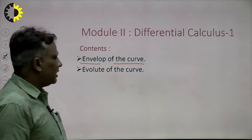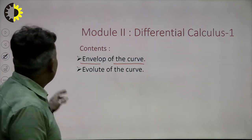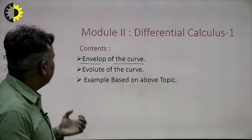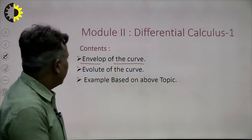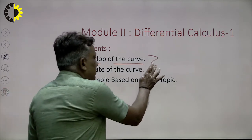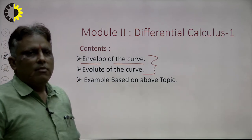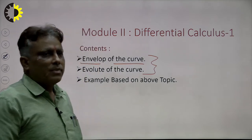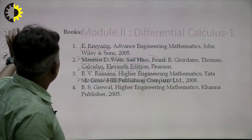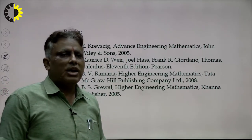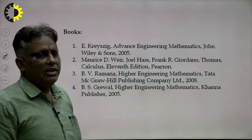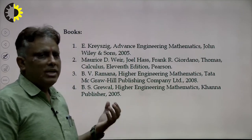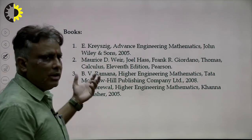After this I explain another topic, the evolute of the curve, and after this I explain examples based on the above topics. These two topics — envelope and evolute — are very important and are new topics for the student. The reference books for these topics are E. Kreyszig, Maurice D'Alvert, B.V. Ramana, and B.S. Grewal. Students can opt for any one of them. If students have any problem, they can refer to the following books.